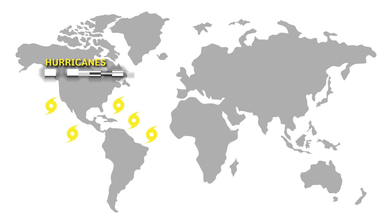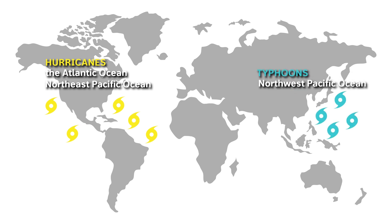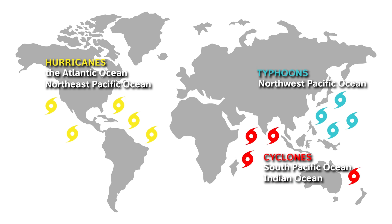Hurricanes form in the Atlantic Ocean or in the northeast Pacific Ocean. Storms that form in the northwest Pacific Ocean are called typhoons. Finally, storms that form in the South Pacific and Indian Oceans are called cyclones.